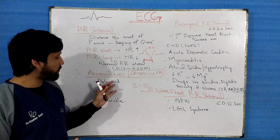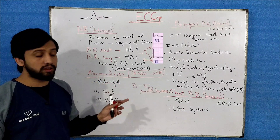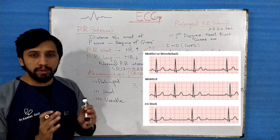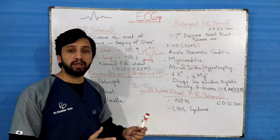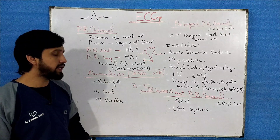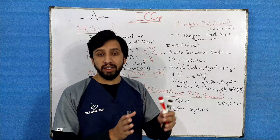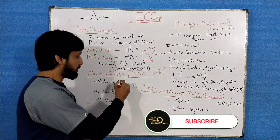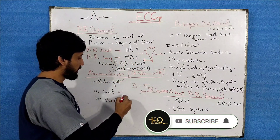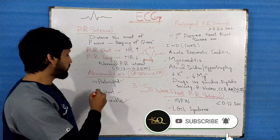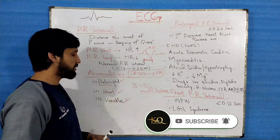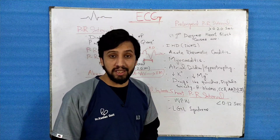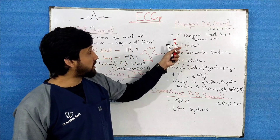The abnormalities of the PR interval involve prolonged PR interval, short PR interval, and variable PR interval. Apart from the normal duration, the PR interval can be abnormal in different clinical conditions. The first abnormality is the prolonged PR interval, which is seen in conditions like first degree heart block.